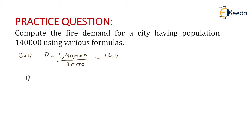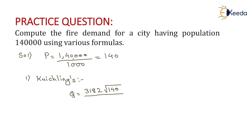The first formula will be the Kuchlings formula. According to Kuchlings formula, the amount of water required for fire extinguishing purpose equals 3182 root P. The value of P is 140, and we want the answer in meter cube per second, so we divide by 60,000. We get the answer as 0.627 meter cube per second.